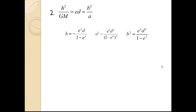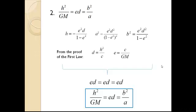Next, we need to show that these three equations are all equal to each other. We know that h equals this, a squared equals this, and b squared equals this. From the proof of the first law, we also know these two equations for d and e. We can then simply substitute all of these equations and simplify to show that all three equations are essentially equal.